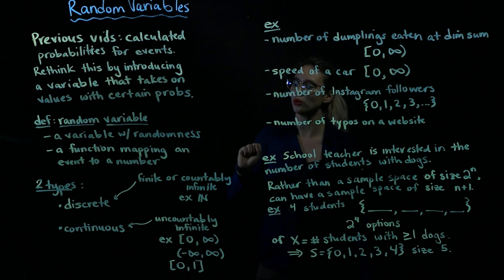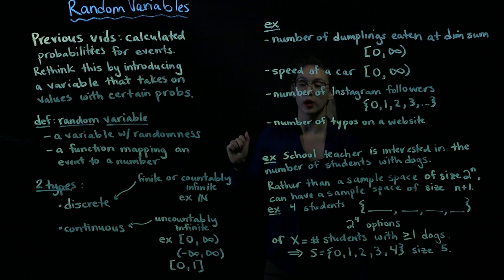So we've got two types of random variables. We have discrete random variables and continuous random variables. So discrete means it takes on either finite or countably infinite many values.